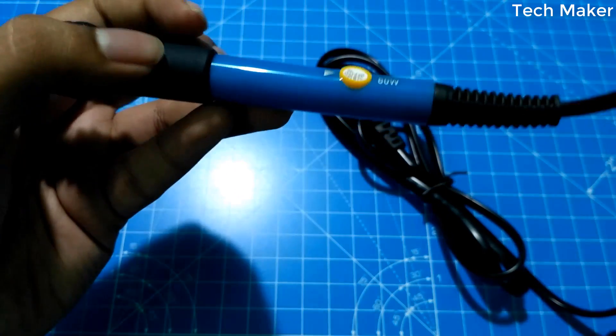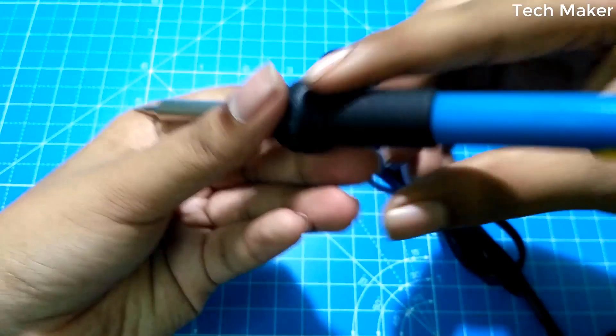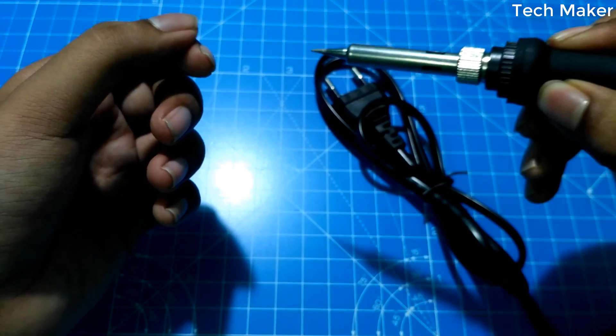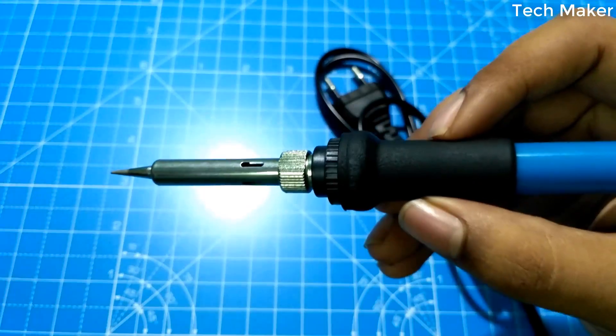While coming to the handle, it is a grippy handle with a rubber grip so that you can easily solder the boards.